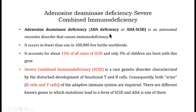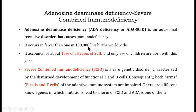Specifically regarding ADA-SCID: in adenosine deaminase deficiency, both the T and B cells are impaired. ADA-SCID accounts for about 15 percent of all SCID cases, and only three percent of children are born with this condition. It occurs in fewer than one in 100,000 live births worldwide. This means that a deficiency of the adenosine deaminase enzyme causes a SCID condition.